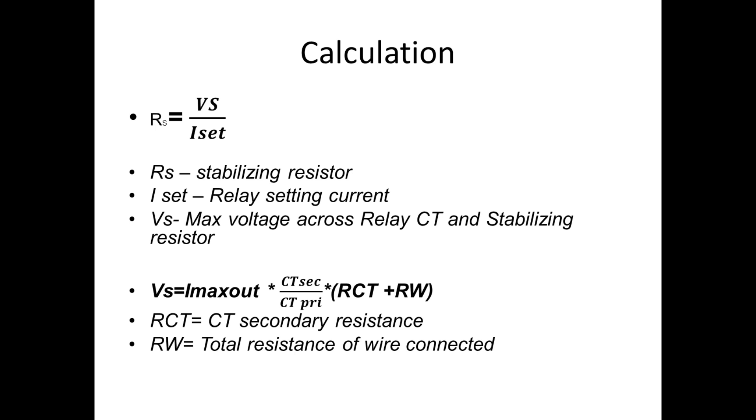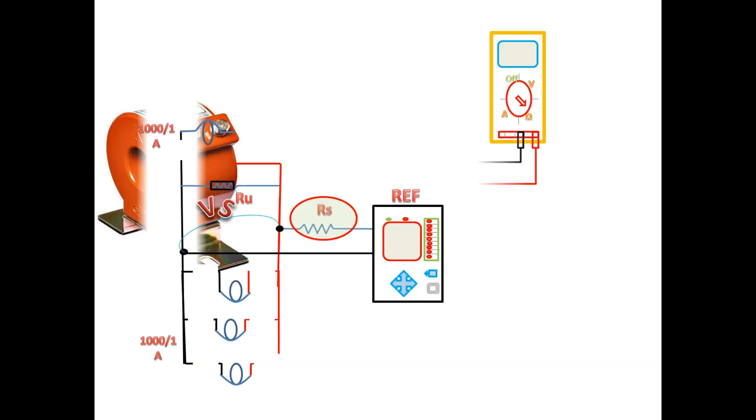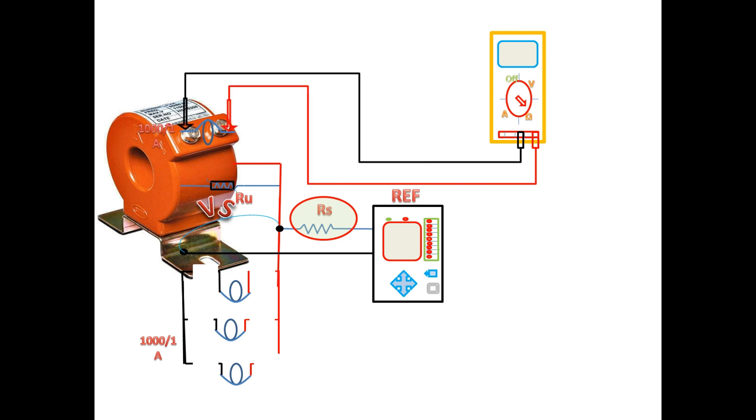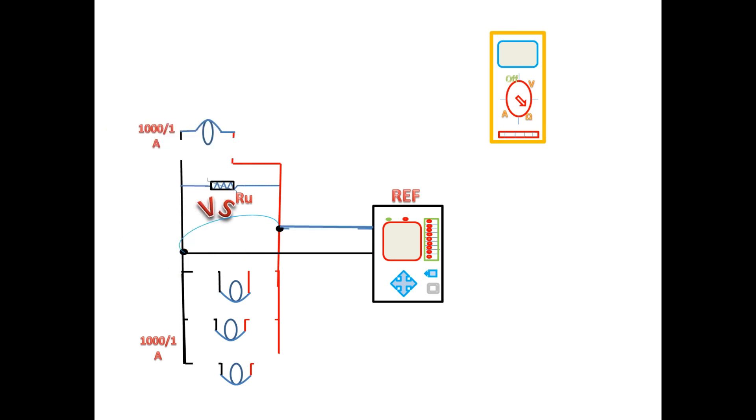To measure this RCT, we have to disconnect the secondary wire to the relay and measure the RCT resistance. RCT is equal to 5 ohms. To measure RW, the total resistance of the wire, we have to disconnect the CT and bypass the resistor RS and then go for measuring the resistor of the wire. We got RW equal to 0.3 ohm.